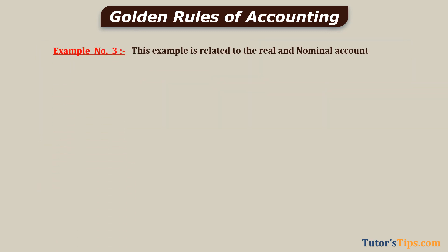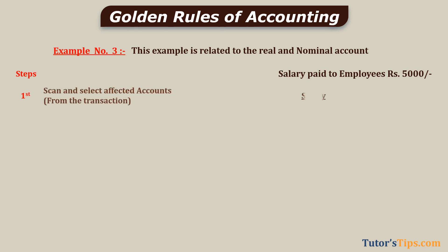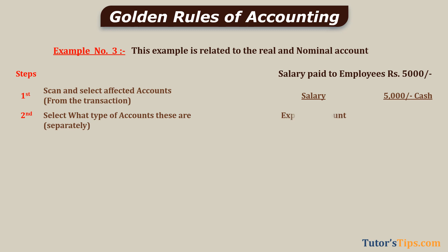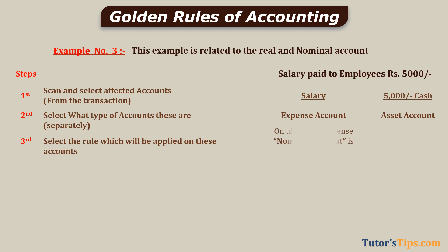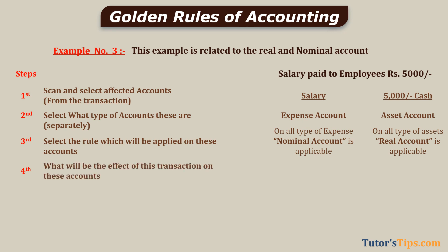Example number three: this example is related to Real and Nominal Account. Salary paid to employees: 5,000. Step one: scan and select affected accounts. The first account is salary and the second is cash. Step two: salary is an expense account; cash is an asset account. Step three: on all types of expenses, Nominal Account is applicable; on all types of assets, Real Account is applicable. Step four: the expense of salary is incurred and payment is made to employees for their monthly salary.